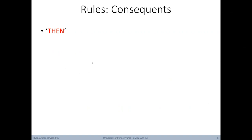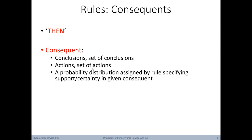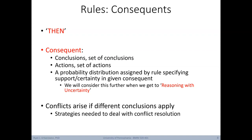The conclusion or consequence of a rule is the 'then' portion. The consequent can be a single conclusion or a set of conclusions, or an action or set of actions. Additionally, each conclusion can have a probability distribution assigned by the rule specifying the support or certainty for that consequent. If multiple rules' antecedents are satisfied, you can end up with conflicts in the consequences being asserted, and we need conflict resolution — similar to semantic networks.